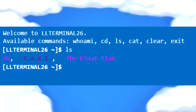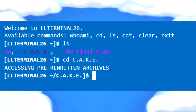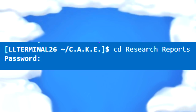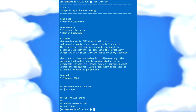With this knowledge, listing the available files using the ls command shows you can only access the cake directory using the cd command at the moment, as the others are password protected. Going to the cake directory, you'd use the ls command again to see the available files, finding info.txt and a directory called research reports. Trying to change directory to research reports shows there's a password needed, so for now use the cat command to open info.txt, and you get a message providing lore.